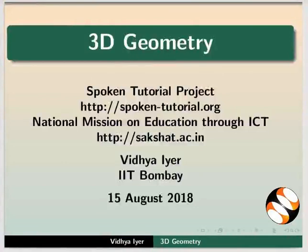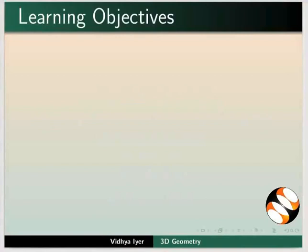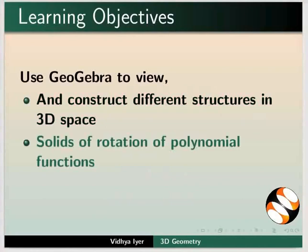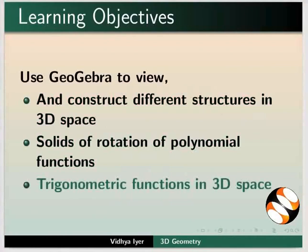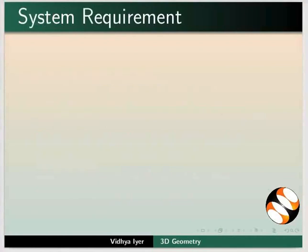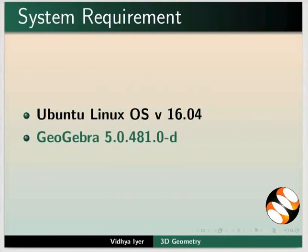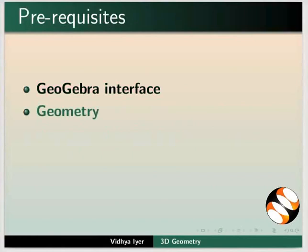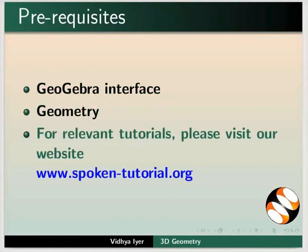Welcome to this tutorial on 3D geometry. In this tutorial, we will learn how to use GeoGebra to view and construct different structures in 3D space, solids of rotation of polynomial functions, and trigonometric functions in 3D space. Here, I am using Ubuntu Linux operating system version 16.04, GeoGebra 5.0.481.0-d. To follow this tutorial, you should be familiar with GeoGebra interface and Geometry. For relevant tutorials, please visit our website.